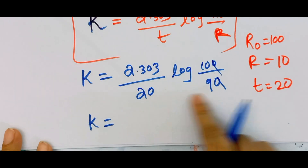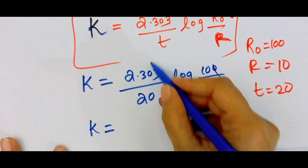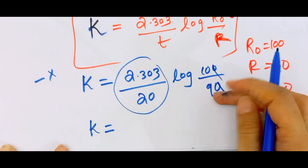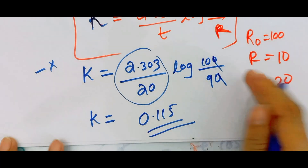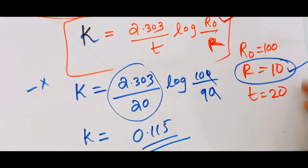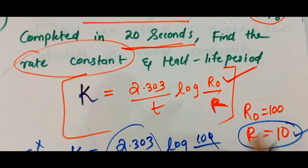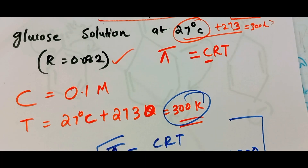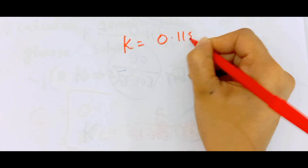Rate constant k = 2.303/20 × log(10/9... wait, log(10) = 1, so that gives 0.115 per second. Now, for 80% completion: R₀ = 100, R = 20, using the same k = 0.115 to find time t.